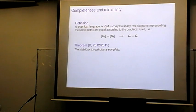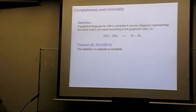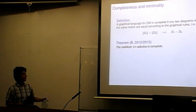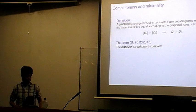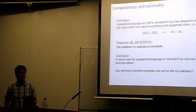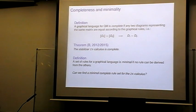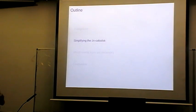The stabilizer ZX calculus is complete, meaning any equality we could derive using matrices we can instead derive using the graphical rewrite rules. What we're interested in is how to simplify the set of rewrite rules, ideally toward a minimal one, without losing completeness. Unfortunately we haven't quite managed to get to a minimal set, but we have made some progress toward simplifying it.